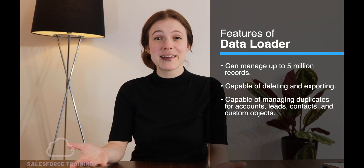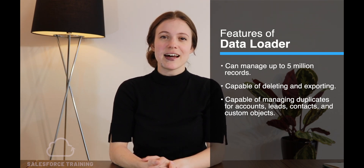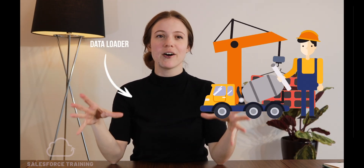A way to remember some of those key points of Data Loader is to imagine Data Loader like a great big earth loader, a great big bulldozer, or some sort of big loader of data. This helps to remember that Data Loader is super powerful and can work up to five million records. To remember that five million, you can imagine this great big bulldozer carving out five million into the ground, or think about all of the dirt a data loader can move, imagining each piece of dirt as a record.